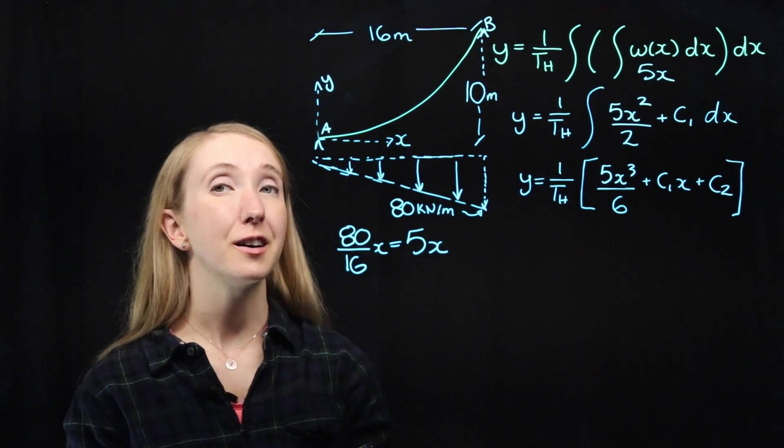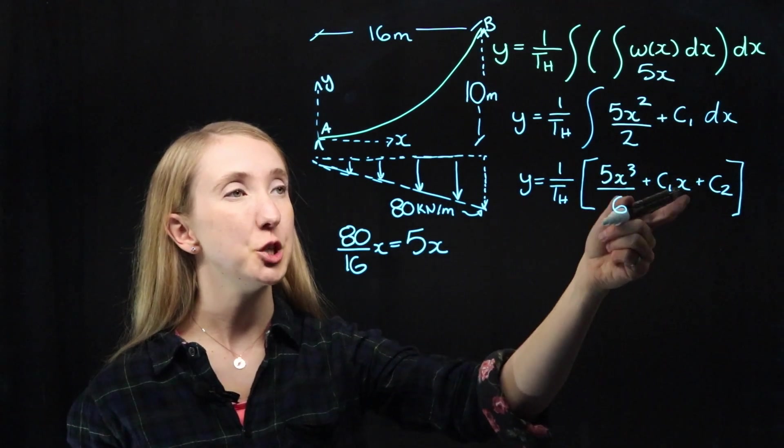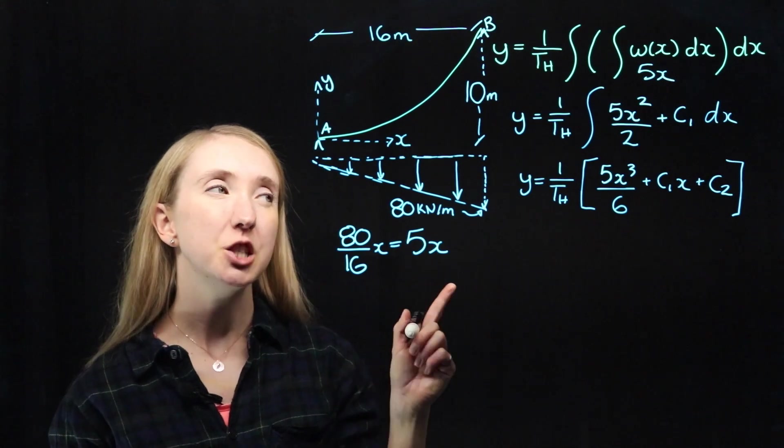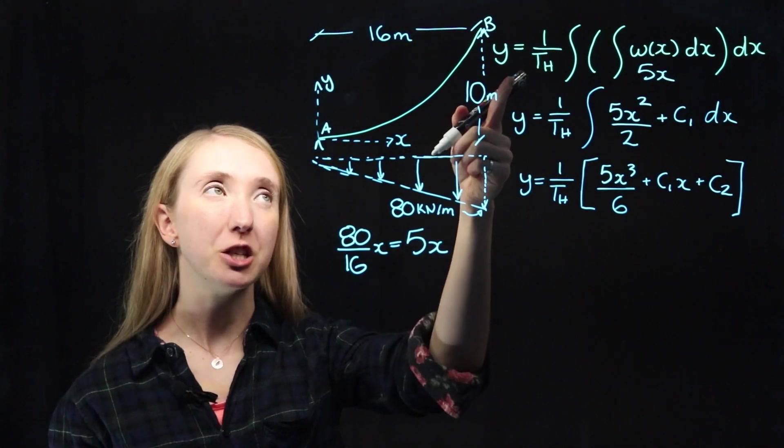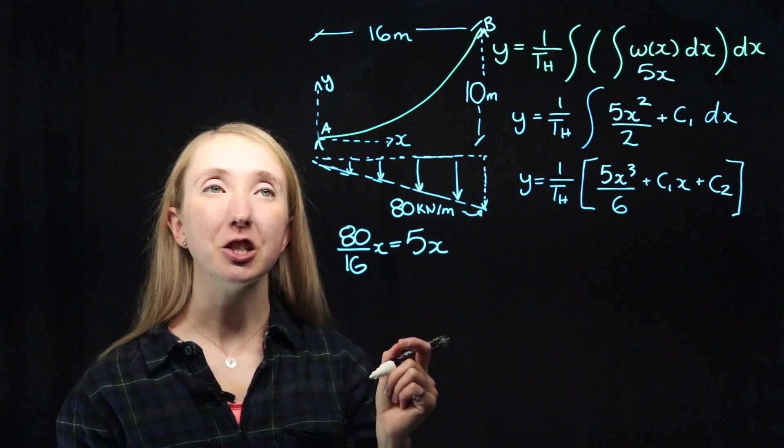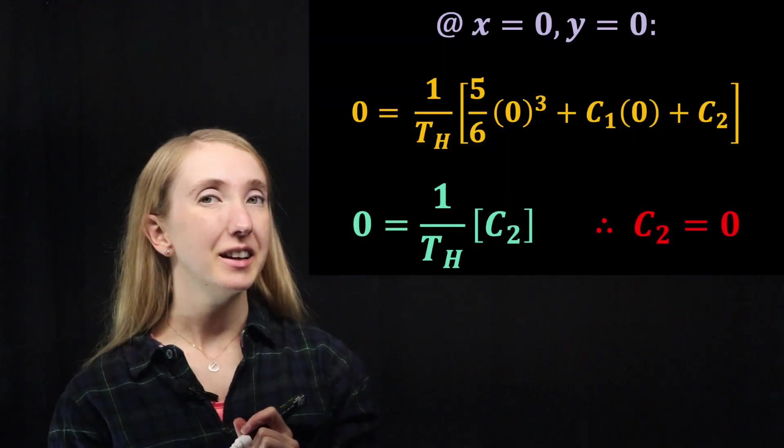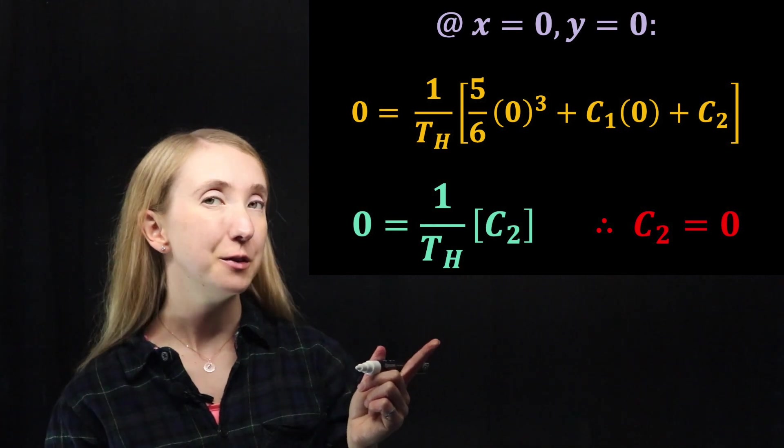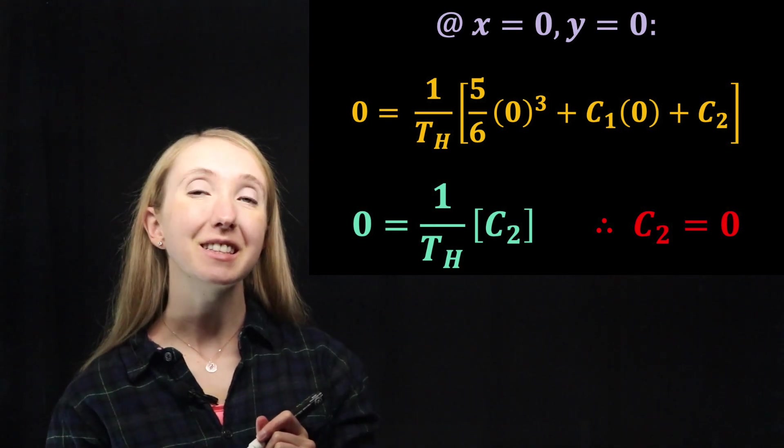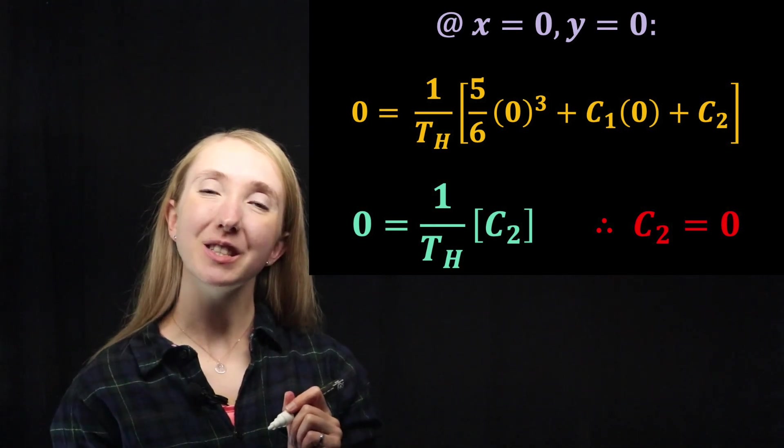Now we want to solve for our constants c1 and c2. To get c2, we can use our shape equation and our boundary condition at the origin. All we have to do is plug in our values of x and y equals zero, and solve, which tells us that c2 is equal to zero.